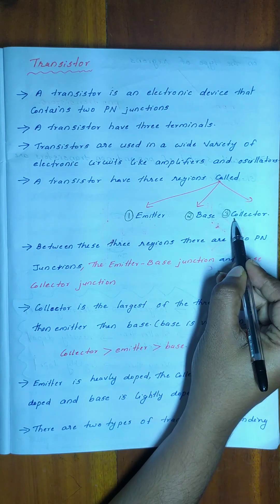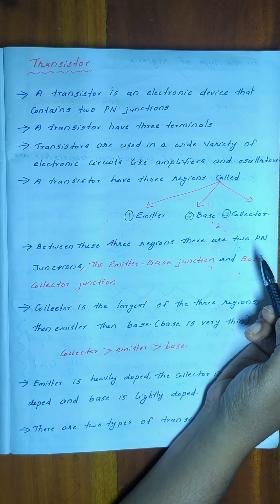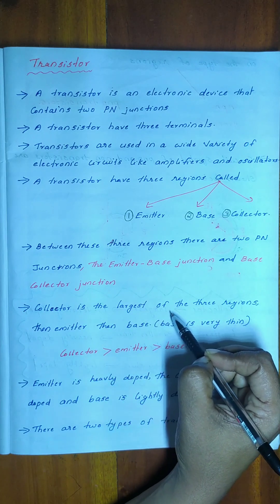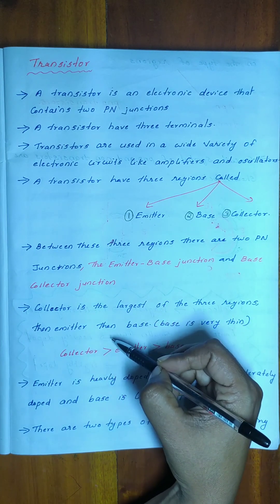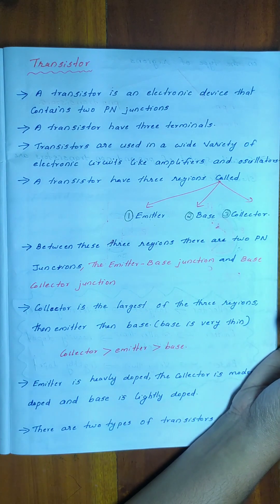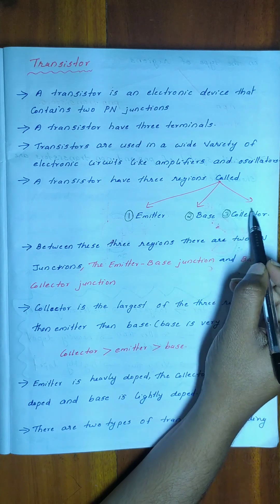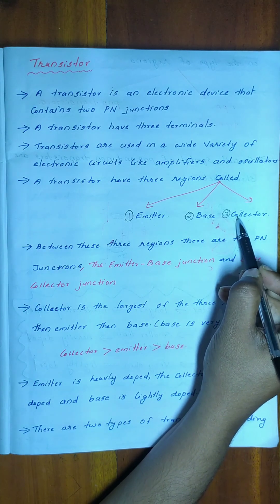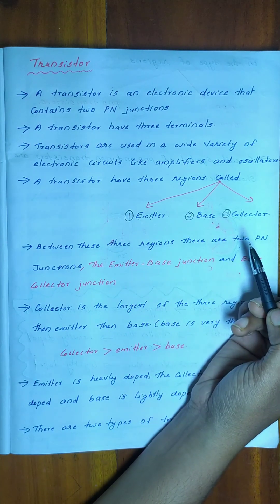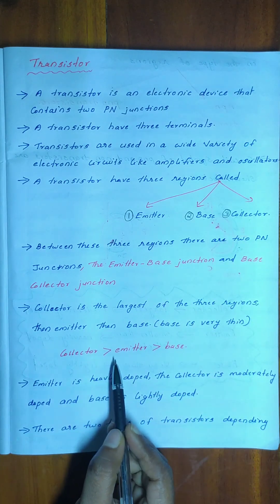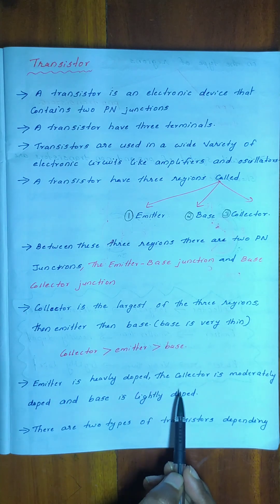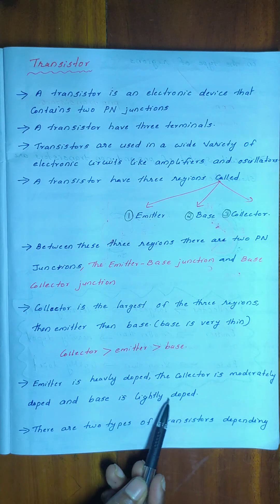The collector is the largest of the three regions. The base is very thin. The emitter, base, and collector are the three terminals of the transistor. The emitter is heavily doped and the base is very thin.